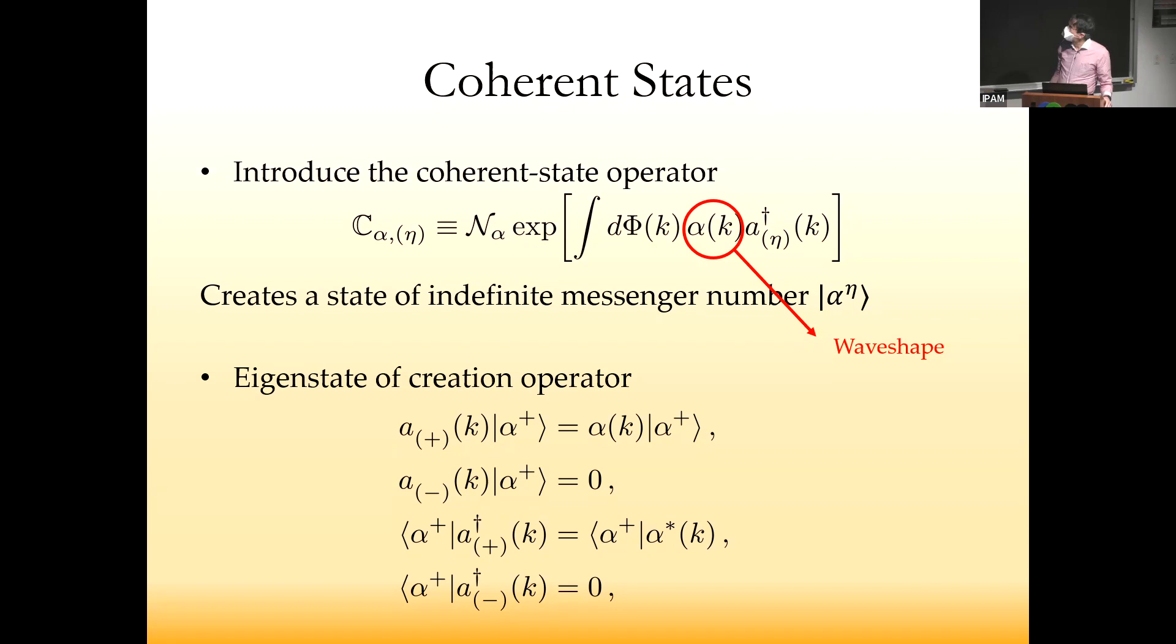The choice of wave shape function is a freedom you have, even in the classical limit, to incorporate different kinds of classical waves. You might have narrow beams or a point source emitting in all directions. These states are eigenstates of the creation operator—when you act on them, you get one of these wave shapes, which is a simple way to do evaluations.